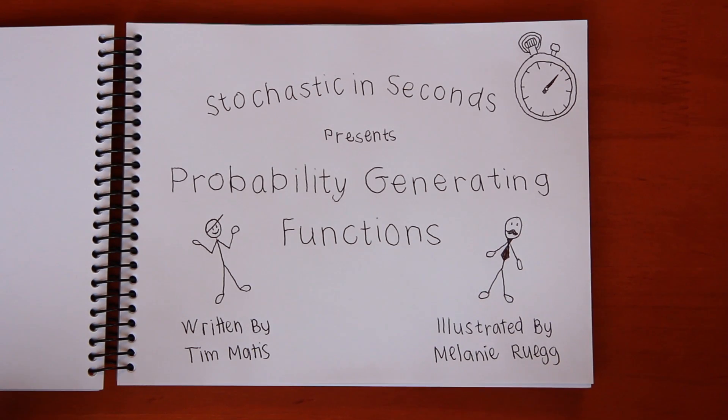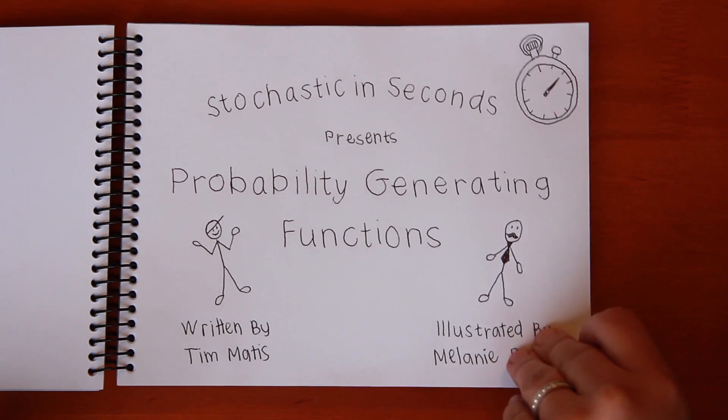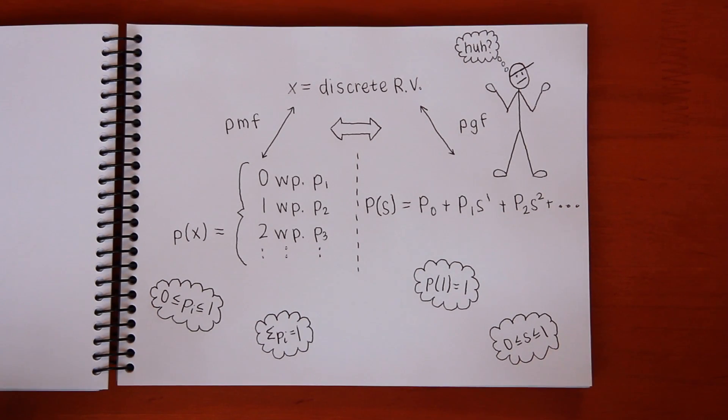Stochastic in Seconds presents Probability Generating Functions. The probability distribution associated with a discrete random variable is a probability mass function P(X). But what many people don't know is that there's also an associated probability generating function, P(S).